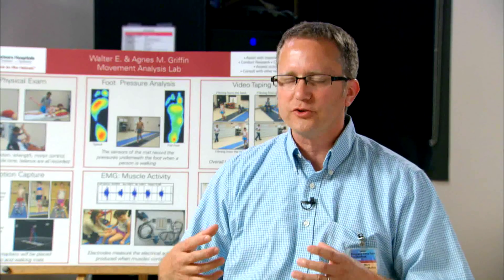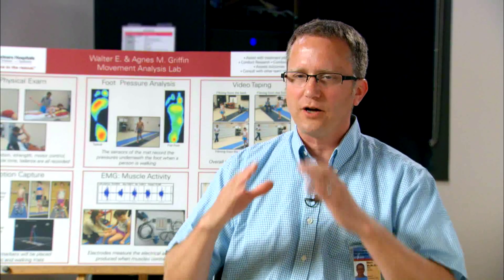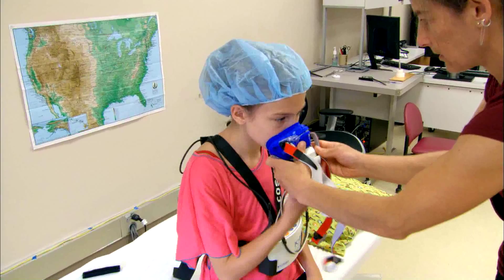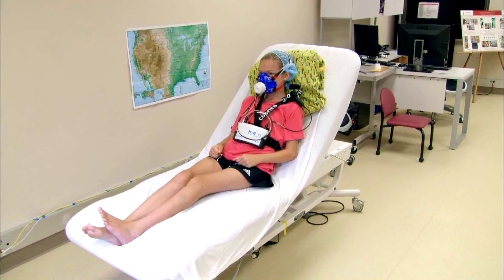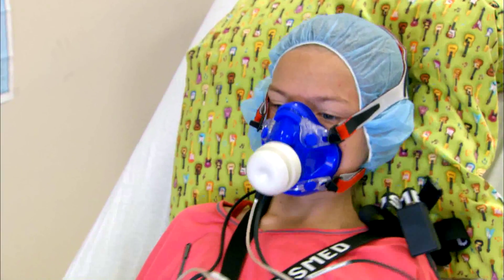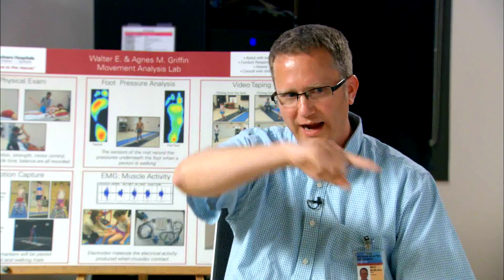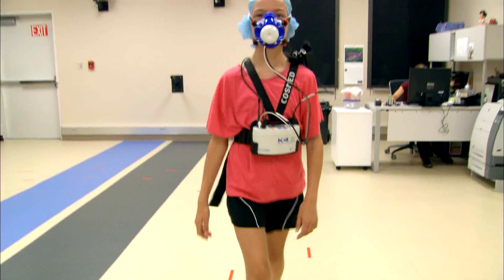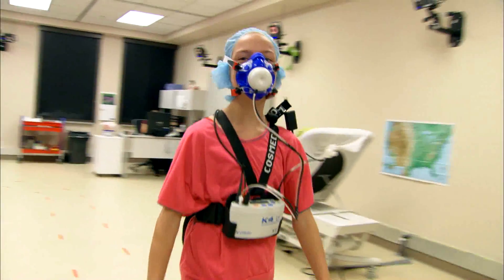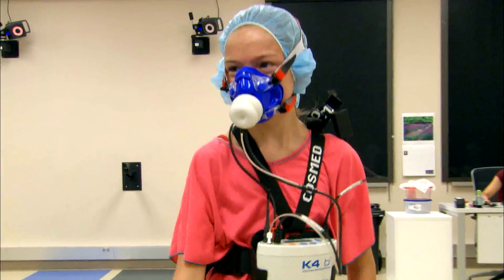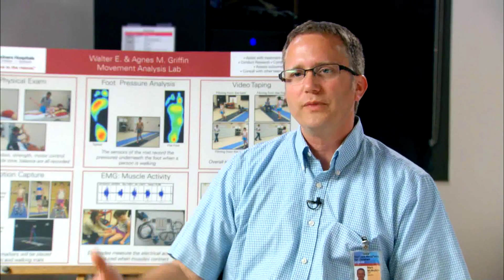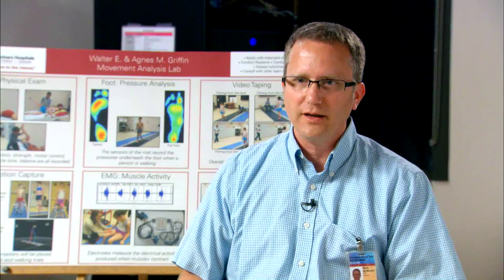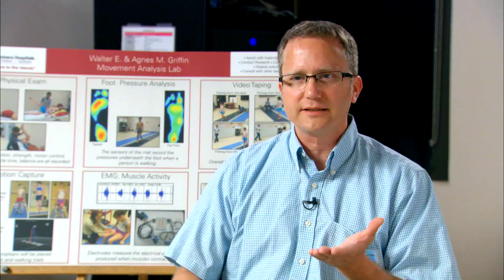We're also looking at how much energy it takes for kids to walk. We put a mask on that covers the mouth and nose and take 10 minutes of resting breathing to measure how much oxygen someone uses at rest — that's a measure of energy usage. Then they get up and walk around an oval in the room, a big red racetrack, and we continue to measure oxygen usage. This lets us know if they're using more energy than typical. It's also very helpful when we see kids a year after treatment — we repeat the whole test and compare energy usage before and after, with the hope that they're using less energy to walk.